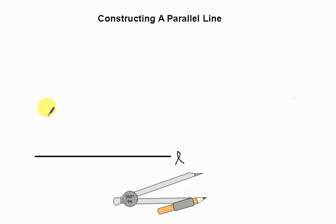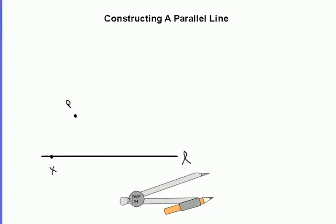I'm going to put point P up here somewhere. We'll put point P right here, and I want to place a point down here, and we'll call this one point X. The first thing we want to do is connect P to X with our straight edge. So let's go ahead and make this connection, taking out a straight edge, and I will do this in a red color, and we'll connect from point P